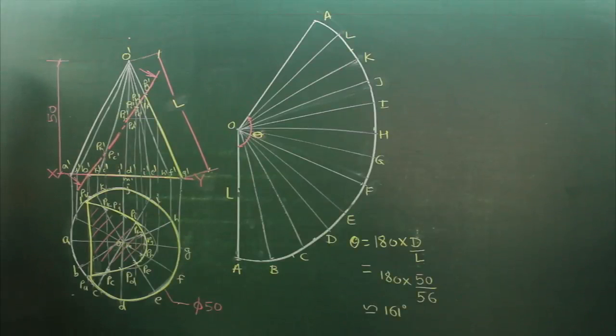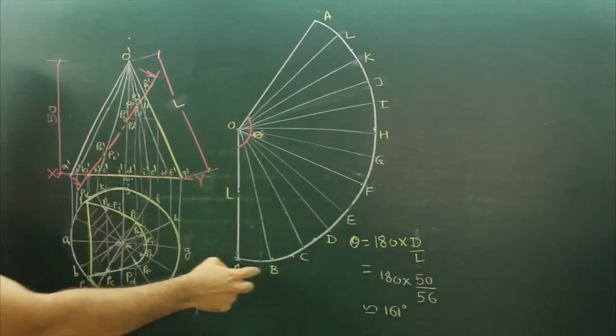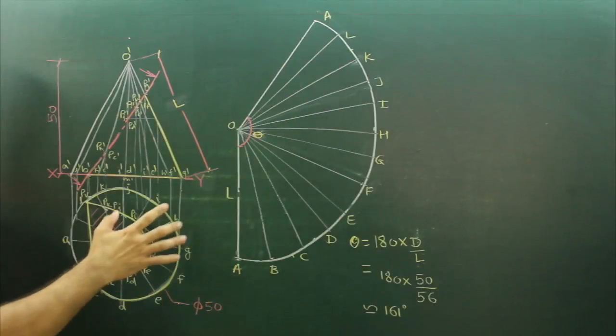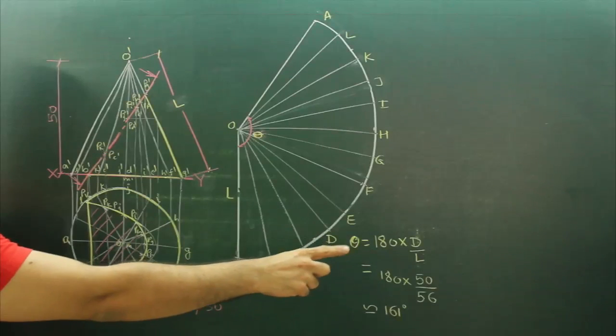Now in this time, what we will do, we will take slant length L, we will draw it straight and we will draw the curve. Now to find out development of a cone, we know the formula. Theta equals to 180 into d by L.